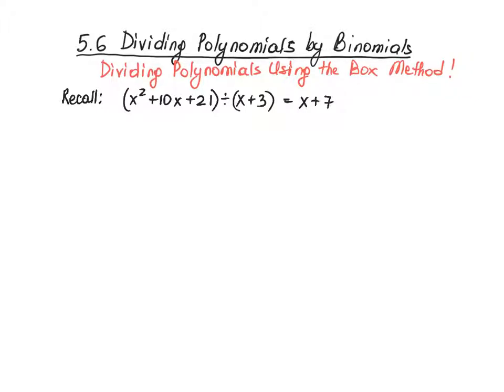Recall that I showed you this example in one of the previous videos. We divided x squared plus 10x plus 21 by x plus 3 and the result ended up being x plus 7.